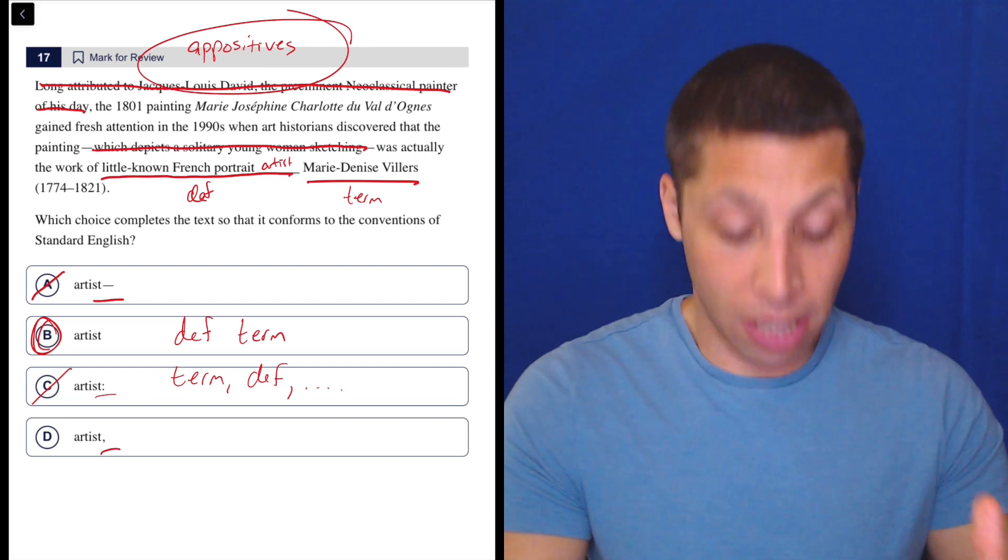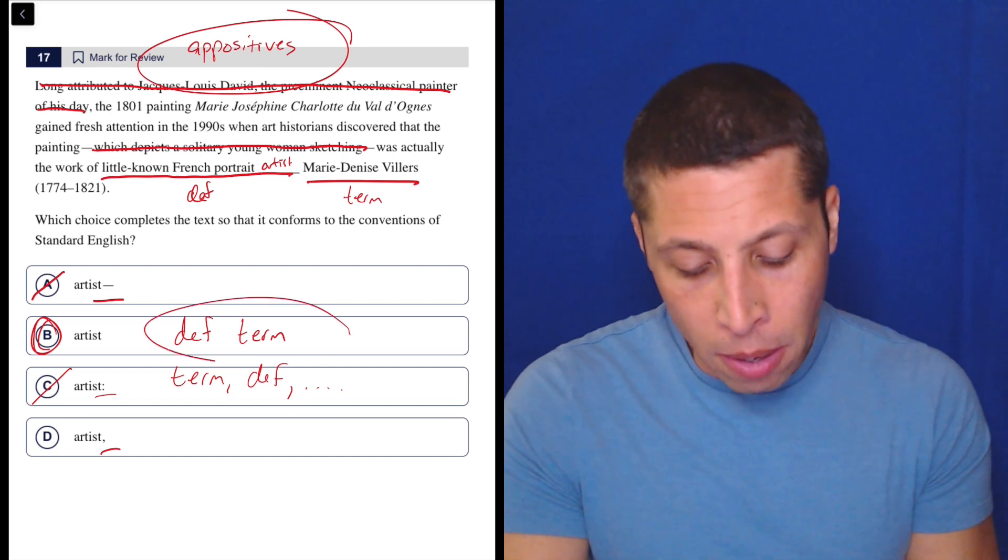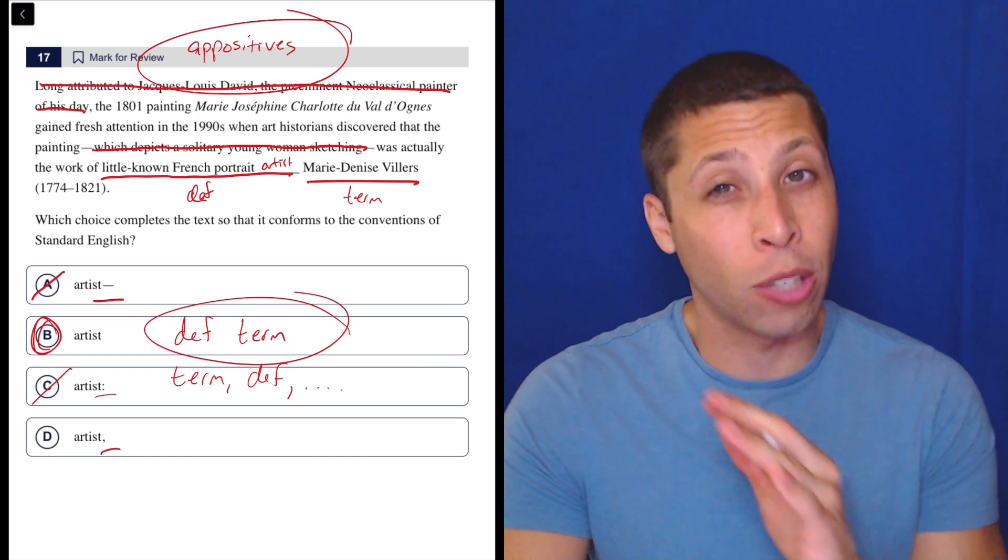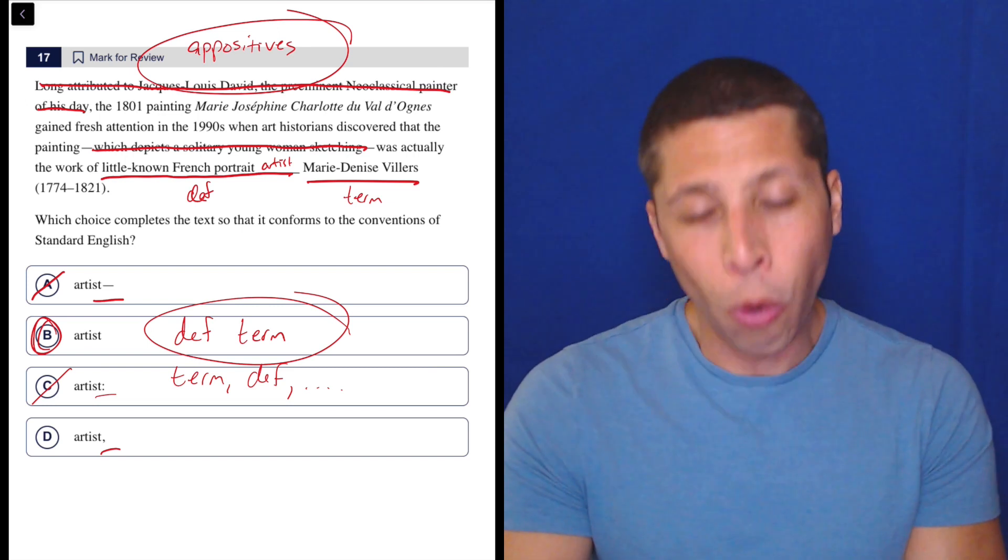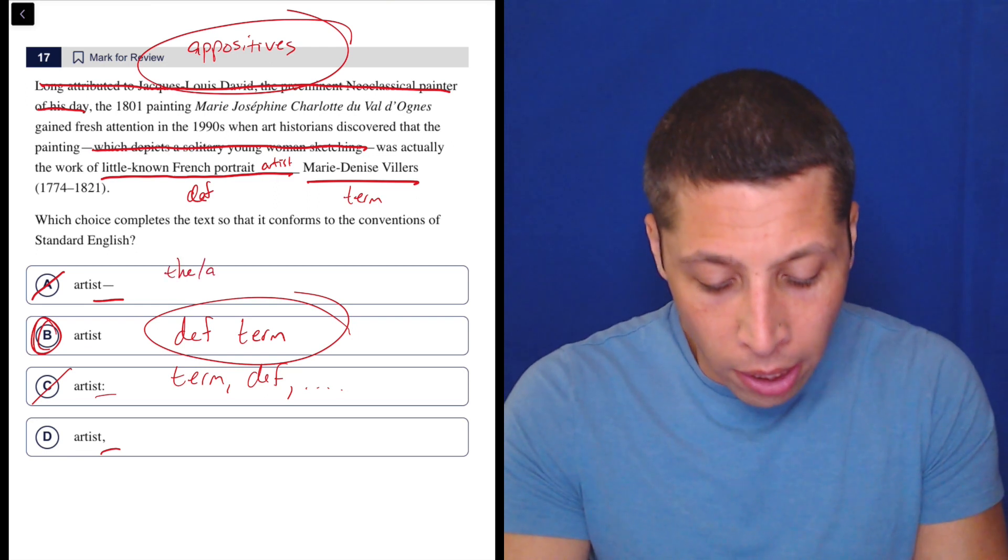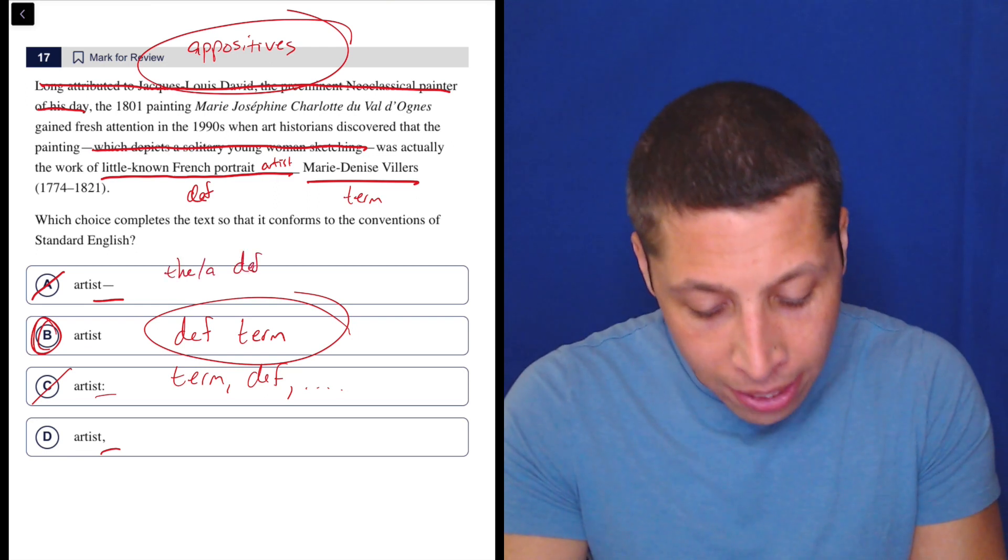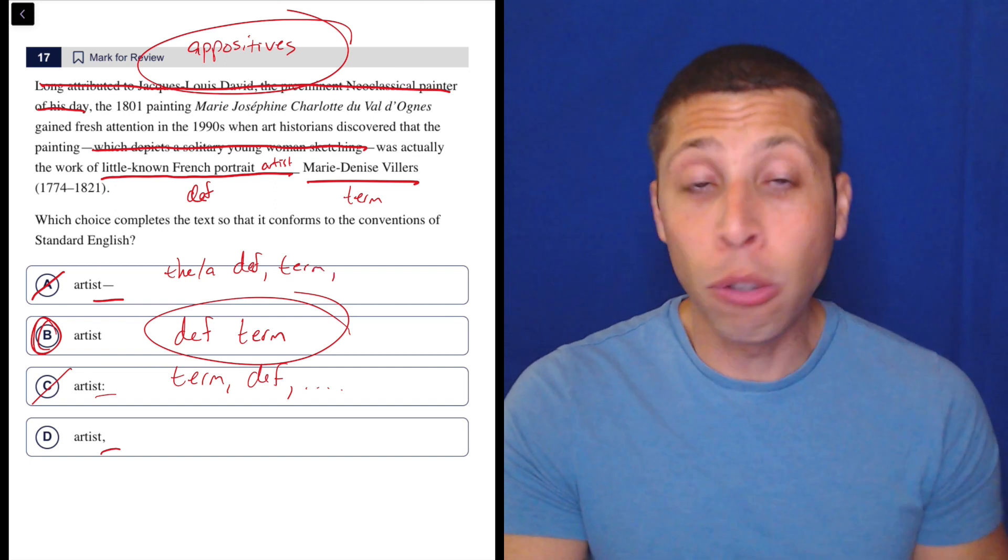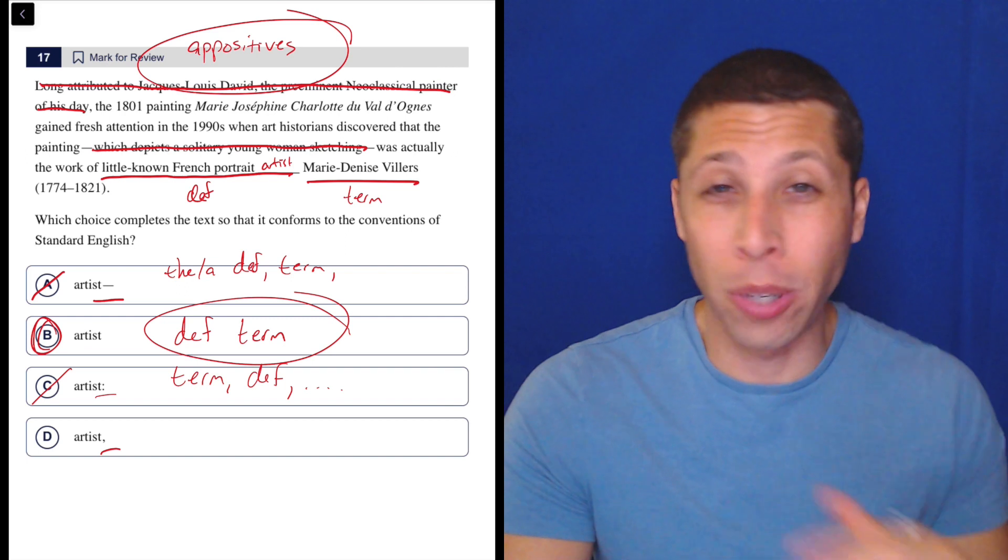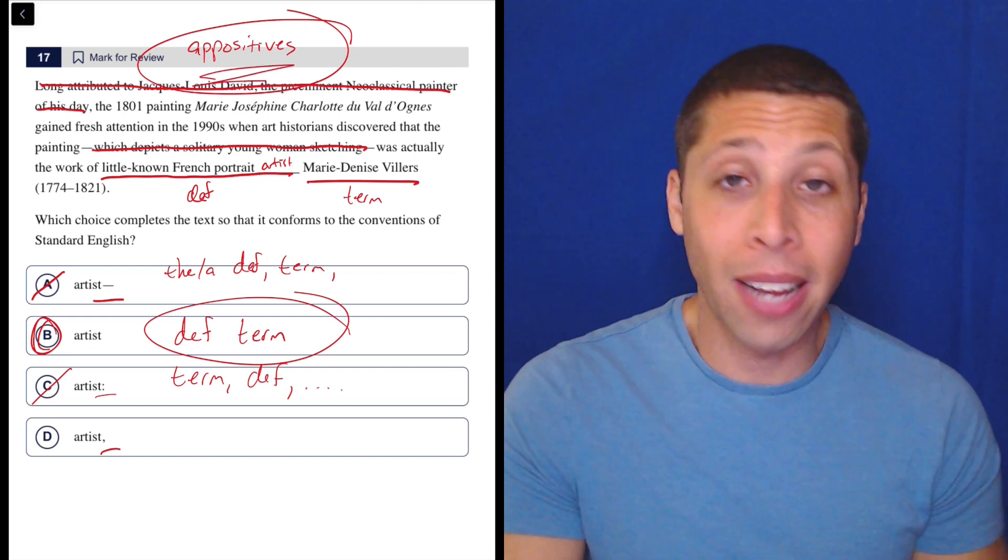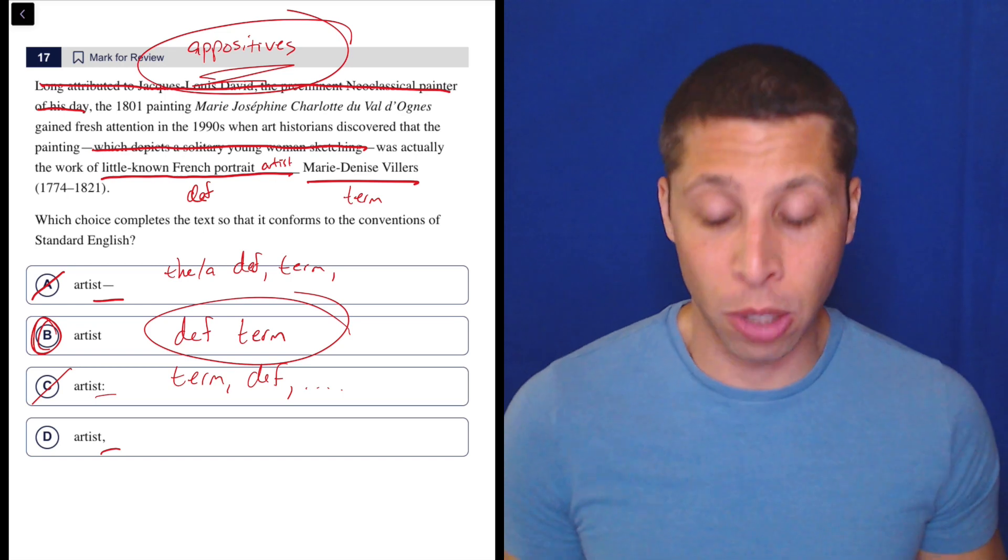So because the definition comes first, we're, in most cases on the SAT, not going to use any commas. The only exception is if that definition gets really, really, really long, or maybe if it has a word like 'the' or 'a' in front of it, then we might have to do two commas to separate the term out. But that's rare, and usually there's something else going on in the sentence that will force you to kind of recognize that. So I wouldn't want you to worry about that, but again, watch my lesson on appositives and I will really break this down with some good examples.